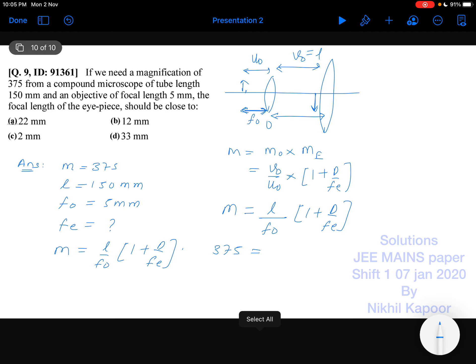Now what we have to do is just substitute the values. So it would be 375 equal to, the L is 150, the fo is 5, 1 plus 25 upon fe that we don't know. So 150 divided by 5 is 30, so it will be 375 upon 30 minus 1 would be equal to 25 upon fe.